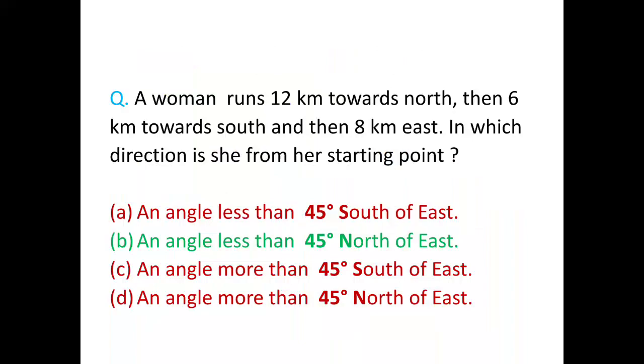The question is: a woman runs 12 kilometers towards north, then 6 kilometers to south, and then 8 kilometers to east. In which direction is she from her starting point? Option B is the answer: she is north of east direction and angle is less than 45 degrees.